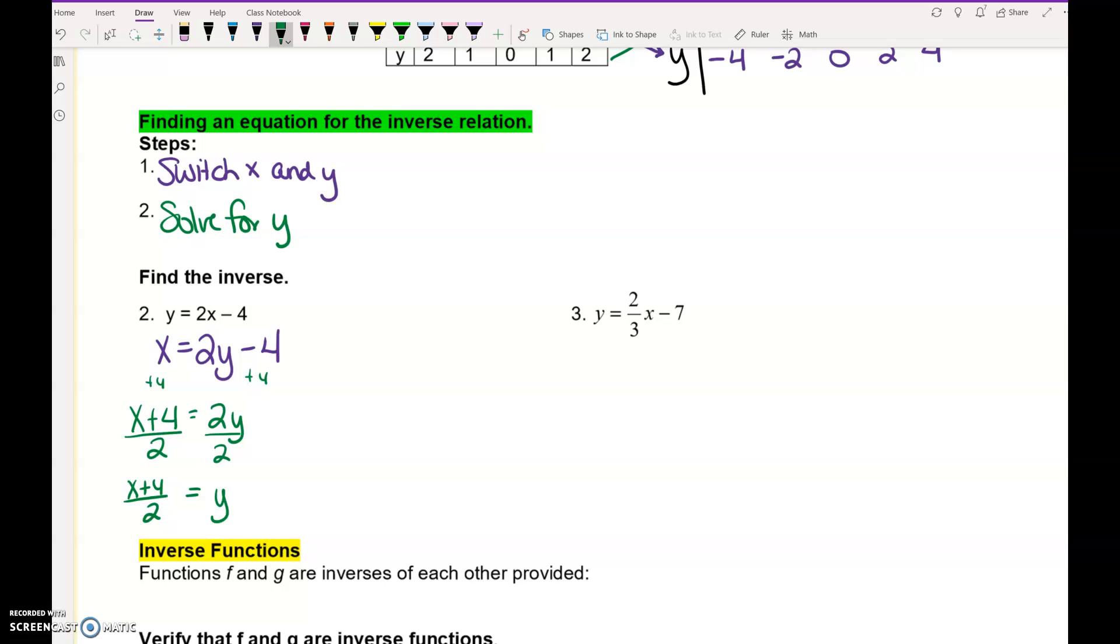If you wanted to, you could rewrite it with the y on the left just to make it look a little bit nicer. As you start doing this a few times, you might start to notice some patterns. Do you see how in the original problem, it was 2 times x, and in the inverse, we have divided by 2? In the original, we had a minus 4, and in the new one, we have a plus 4. Inverses undo each other, so the opposite operation is going to exist in the inverse.